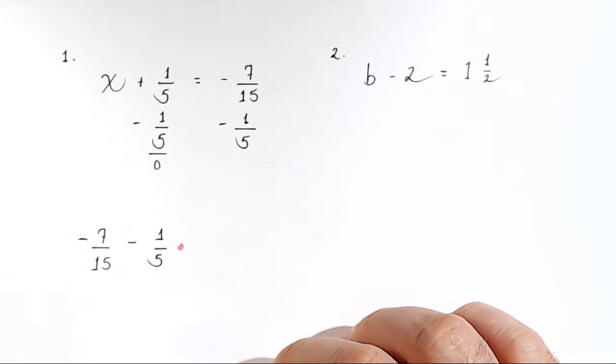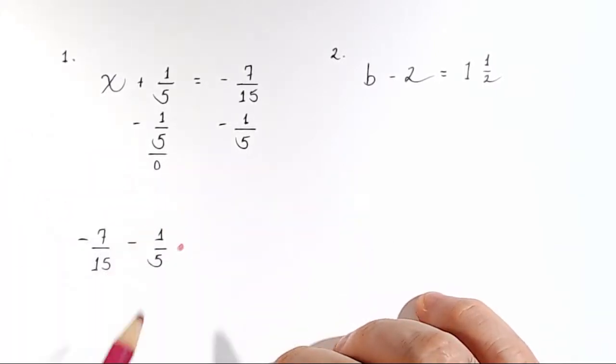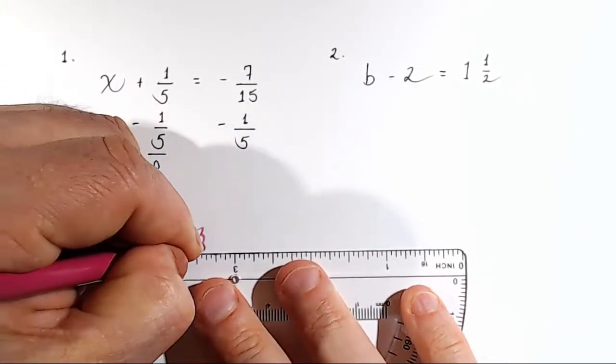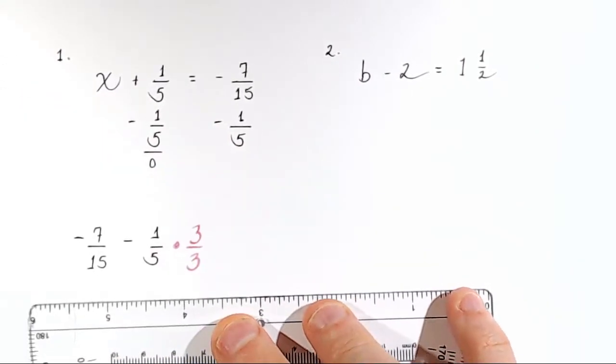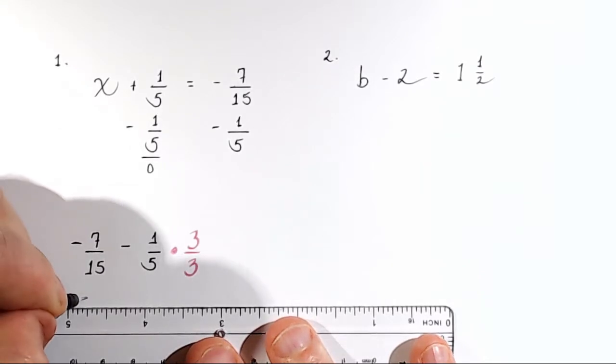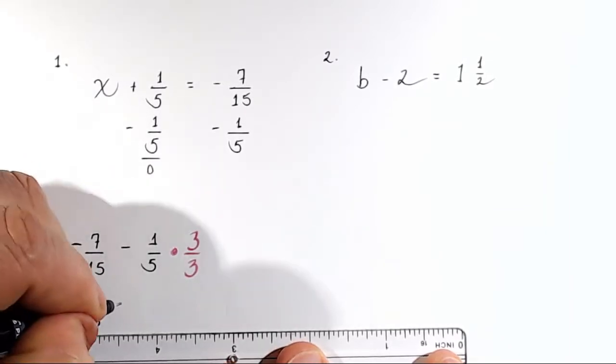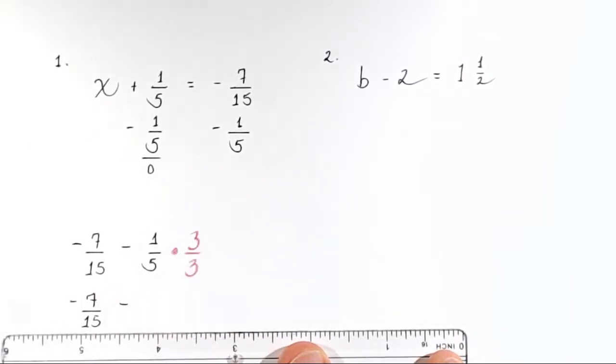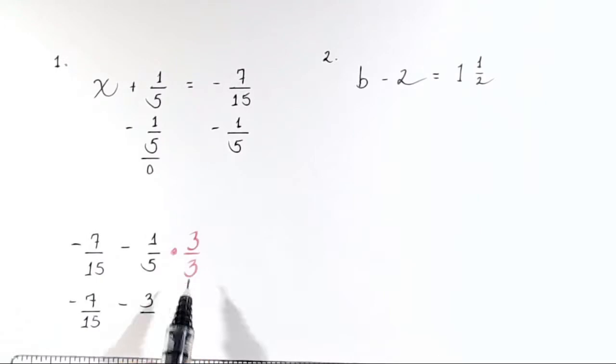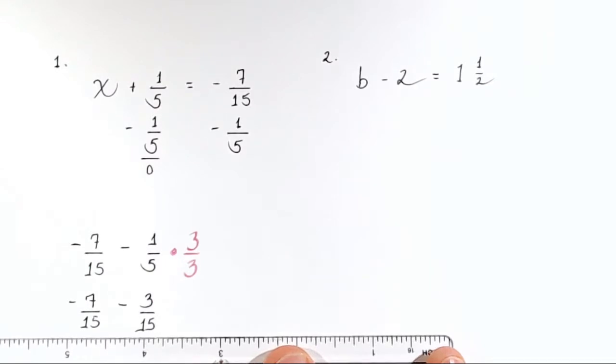So we have to multiply one-fifth by something that will turn this 5 into a 15. So we have to ask ourselves, what times 5 equals 15? It's going to be 3, right? But we can't just multiply the 5 by a 3. We have to multiply the entire one-fifth fraction by 3 thirds. So let's perform that. We'll rewrite negative 7 over 15 minus 1 times 3 is 3 over 5 times 3 is 15.